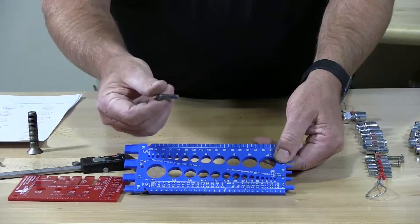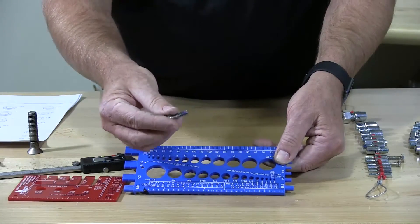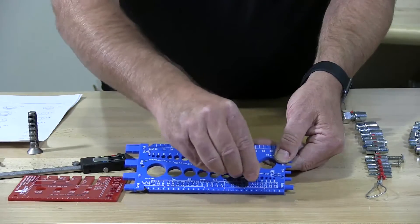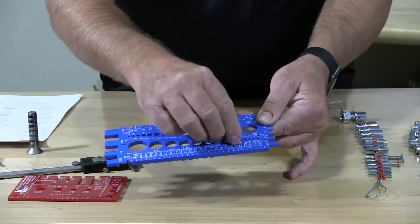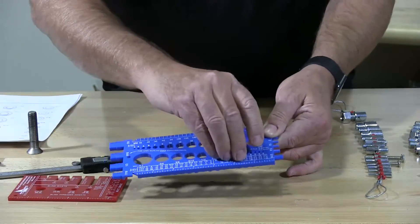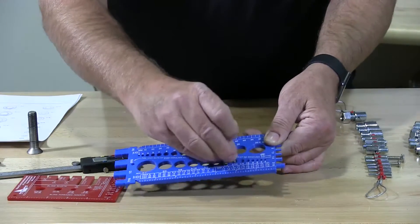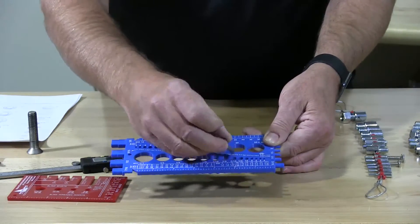So to measure this hex cap screw, I would go to look what hole it would slide in snugly and we can see if it's in a quarter twenty. This is the five sixteenths. It's too big. It's just slopping around in there.